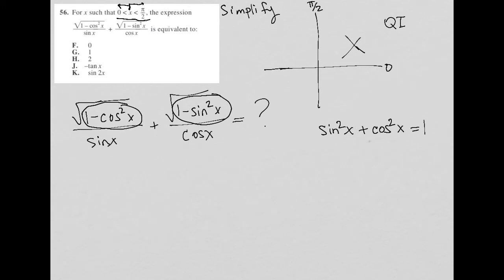So when I rearrange this equation into 1 minus cos squared x, what I would get there is sin squared x. So that means that I'd have the square root of sin squared x there divided by sin x. And the same thing on this side.